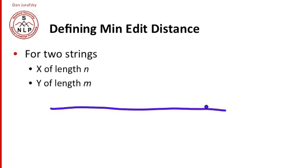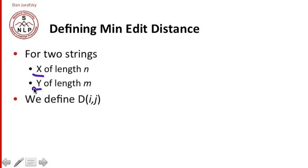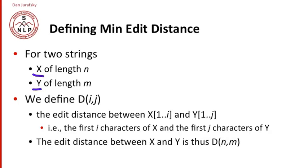So let's look at an example of how this works. And we're going to define minimum edit distance formally as for two strings. We have string X of length n and string Y of length m. We'll define a distance matrix, capital D, of i, j. And that will be the edit distance between the first i characters, one through i, of X.